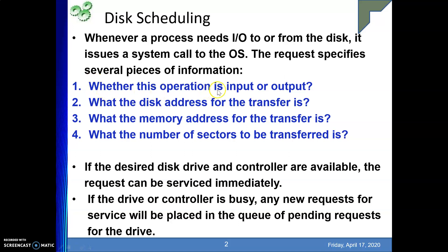The first piece of information is whether this operation is input or output — that means direction of communication, whether it is read or write. Next is what the disk address for the transfer is — that means from which location of the disk we are doing the transfer: the cylinder number, sector number, and head number. Then what the memory address for the transfer is — that means to which location we are sending data or from where we are getting data for a write operation.